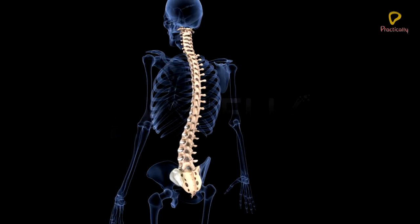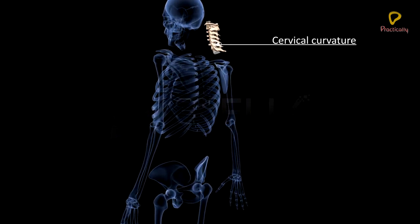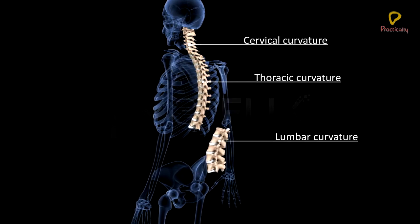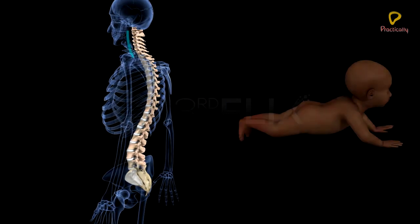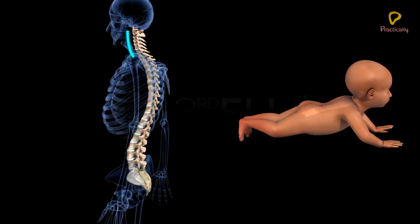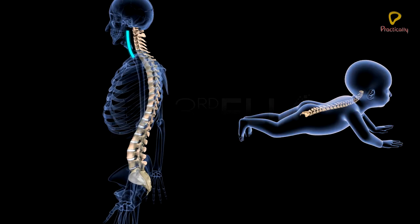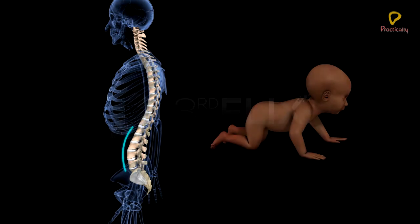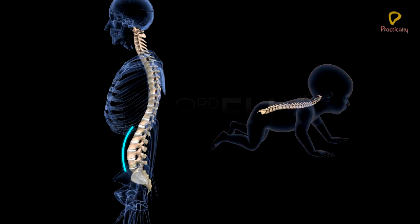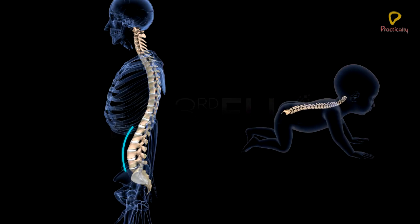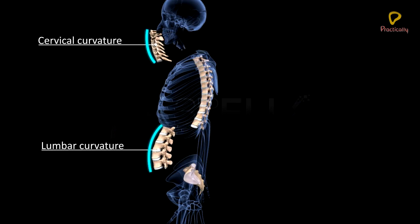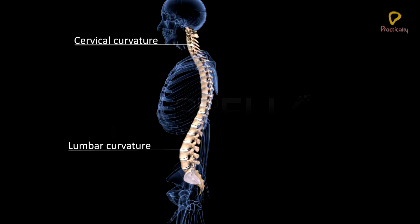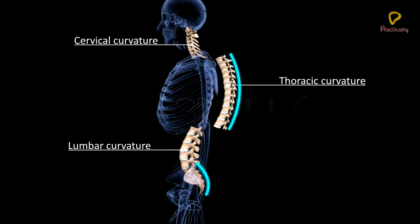It has four curvatures: cervical, thoracic, lumbar, and sacral. The cervical curvature is developed when the infant starts raising his head, and the lumbar curvature is formed when he starts crawling. The cervical and lumbar curvatures are directed forwards, whereas the thoracic and sacral curvatures are directed backwards.